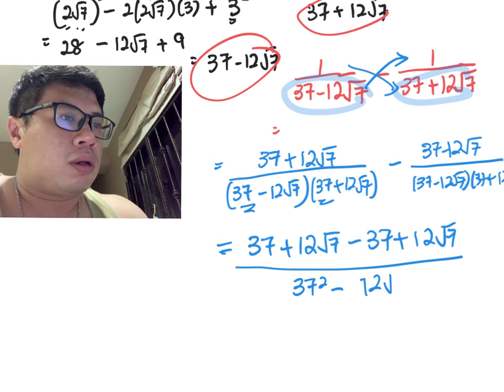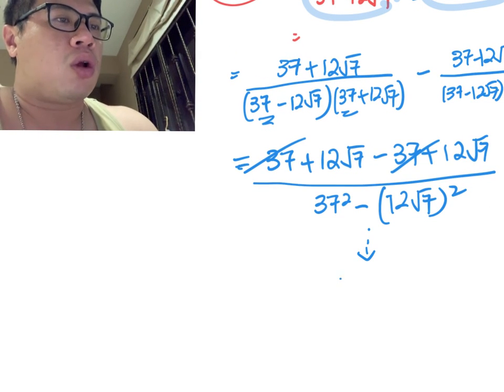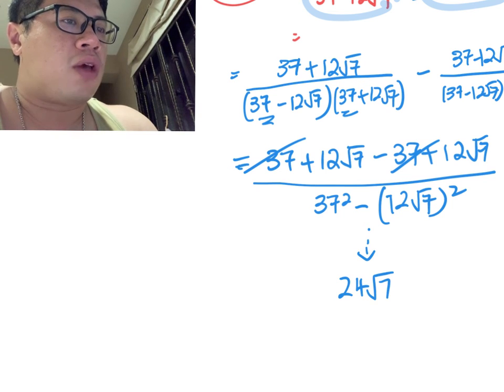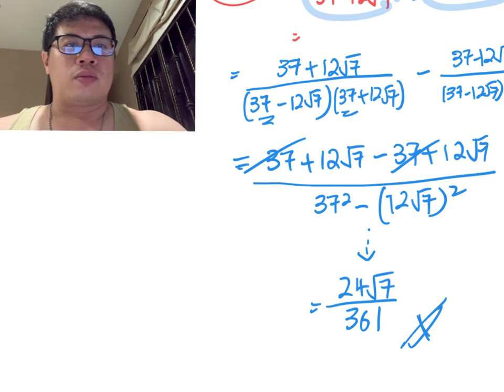If you simplify this, you'll find that it cancels off very nicely. At the end of the day, you're going to get 24√7 over 361, and that's it for all these questions.